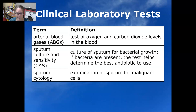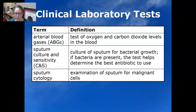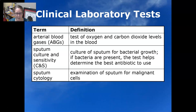The sputum culture and sensitivity is a culture of the sputum, which comes from the lower respiratory system — the bronchi or lungs — and we look for bacterial growth. If bacteria are present, the test will tell us what type of bacteria are present and what antibiotic they are sensitive to. Sputum cytology is the examination of sputum for malignant cells, so you're looking for cancer cells.